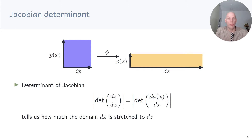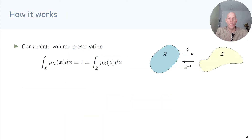To understand how a change of variables works, we need to look at the Jacobian determinant. Assume we want to transform x into z via a transformation phi. Then the determinant of the Jacobian, d phi dx, tells us how much dx is stretched into dz. Keeping in mind that the Jacobian determinant is a scaling factor between two different domains, here's how the change of variables trick works.